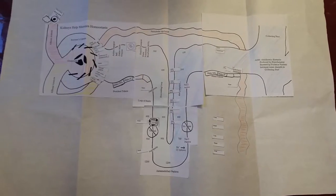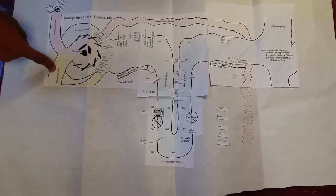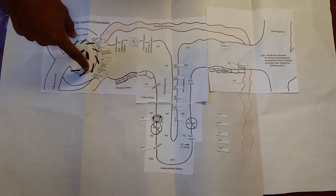Hey guys, today we're going to be talking about nephron function. First, we start with blood entering through the afferent arteriole, and on the other side blood exits through the efferent arteriole. Once the blood enters, it goes through the glomerulus where filtration occurs.